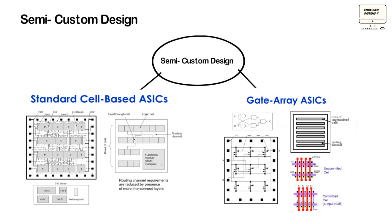The second type is gate array based ASICs, which is the least customizable. Here the silicon layers are standard, but the metallization layers — which allow the interconnection between different areas on the chip — are customizable. This type of ASIC is perfect where a large number of standard functions are required, which can be connected in a particular manner to meet the given requirement.